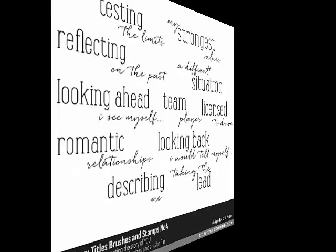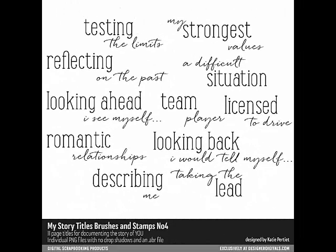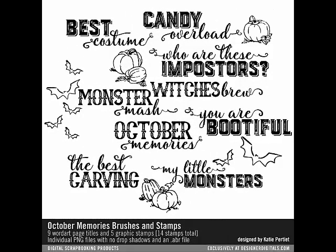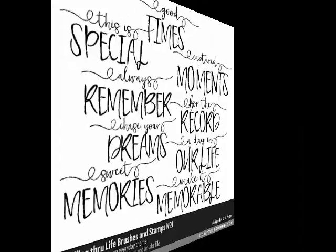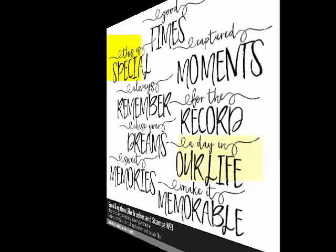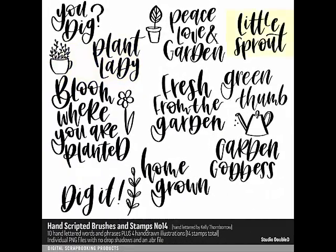You can combine words from within a set, or you can put together two or more sets to come up with a title that will help you capture the essence of your photos and your memories. For example, you can mash up the titles 'A Day in Our Life' and 'This Is Special' to create 'This Is Our Life.' Or you can take 'Little Sprout' and mash it with 'Plant Lady' to give you 'Little Lady.' Here's how.